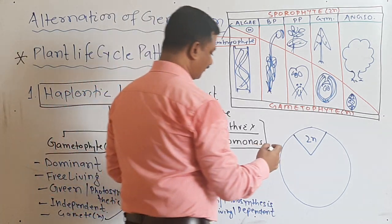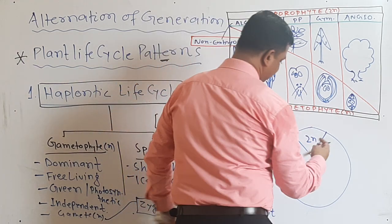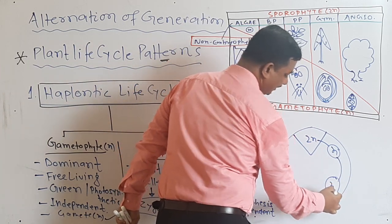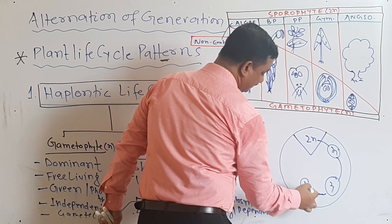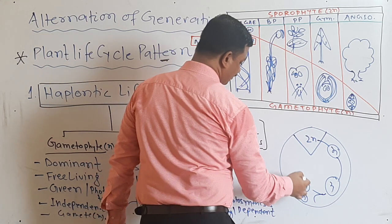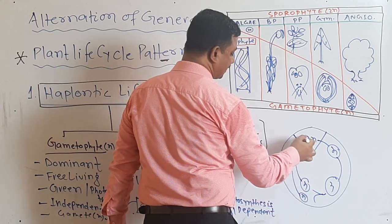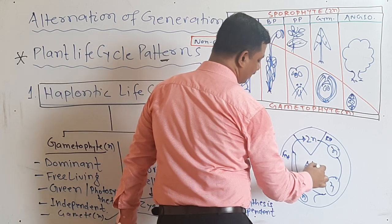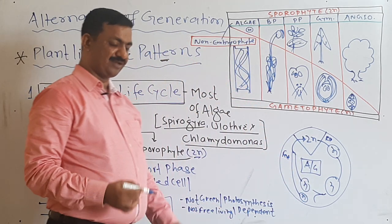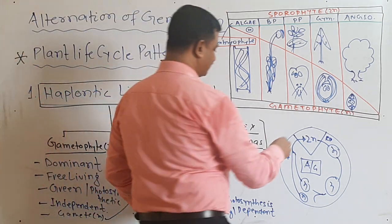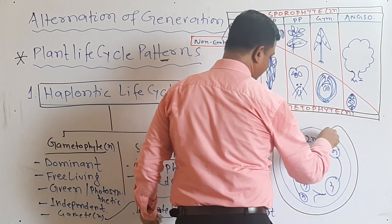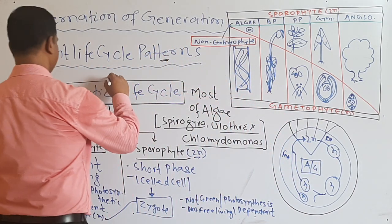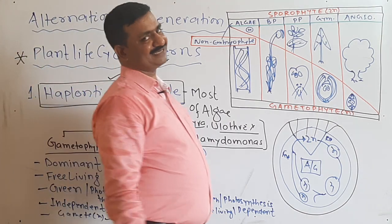Why non-embryophyte? Because there is meiosis in the zygote — zygotic meiosis. The body is n again; this n body matures and again undergoes mitosis to form male and female gametes. These gametes undergo fertilization to form a zygote. This is the reduction division, this is fertilization, and this is called alternation of generation.